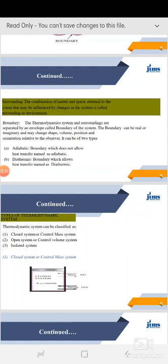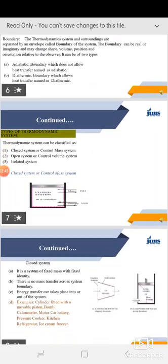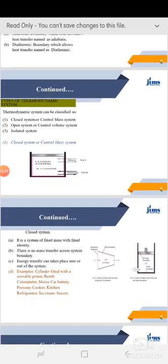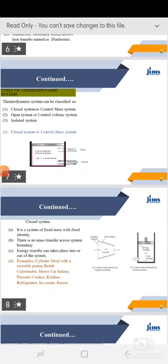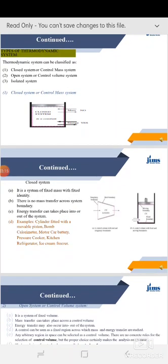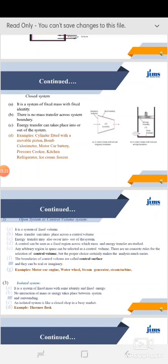There are three types of thermodynamic systems: closed system (or control mass system), open system (or control volume system), and isolated system. A closed system is a system of fixed mass with fixed identity — there is no mass transfer across the system boundary, but energy transfer can take place into or out of the system. Examples include a cylinder fitted with a movable piston, bomb calorimeter, motor car battery, pressure cooker, kitchen refrigerator, and ice cream freezer.